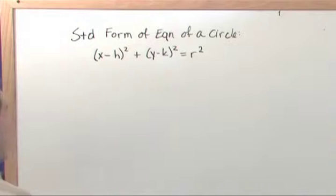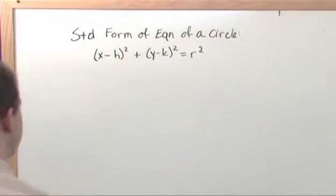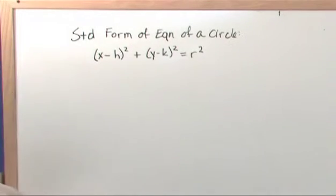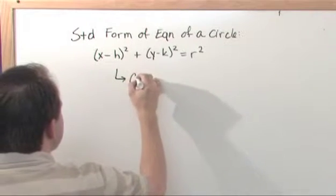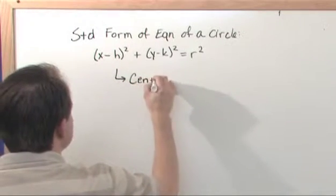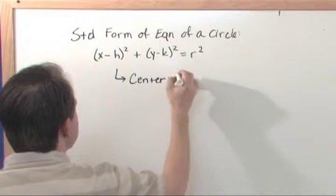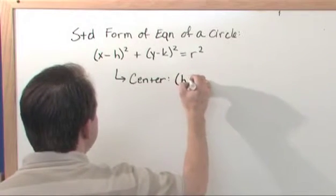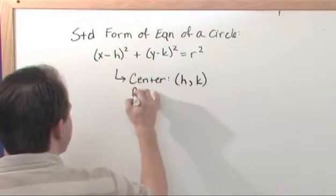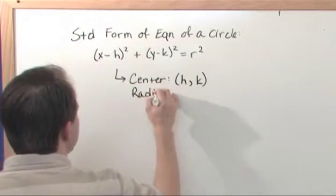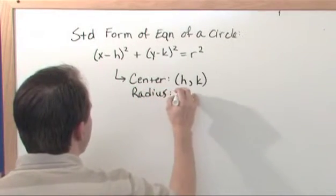Now, before you get too wrapped up into this, don't get too scared by this. This looks a lot harder than it is. Let me just finish a few things, and then we'll tackle it. Some notes I want to tell you. The center of this circle is located at h, k. And the radius of this circle is equal to r.